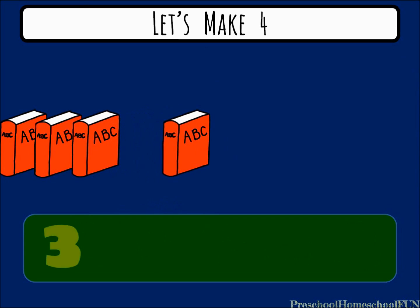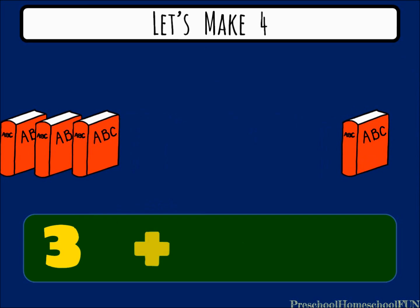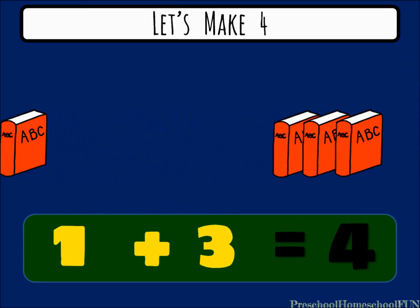Let's slide one book to the right. Now we have 3 on one side and 1 on the other side. 3 plus 1 equals 4. Slide a couple more over. And look, we have 1 on the left, 3 on the right. 1 plus 3 equals 4.